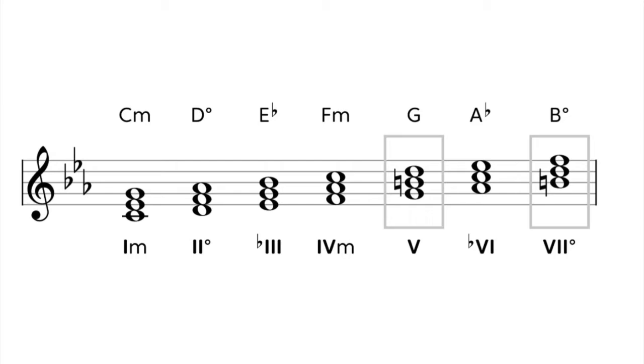Let's start in C minor. The most common chords you find are C minor, D diminished, E flat major, F minor, G major, Ab major, and B diminished.